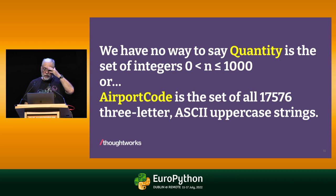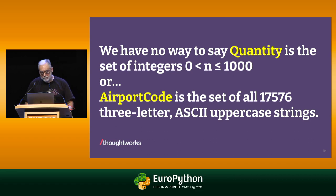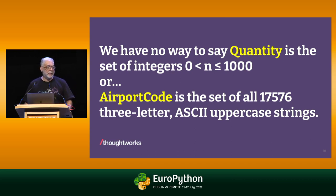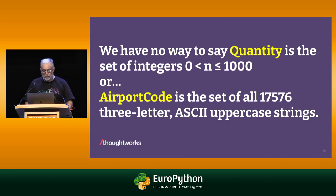We have no way to say that a quantity type in an e-commerce application should validate that orders are not placed with zero of an item or more than a thousand — that could be an interesting safety measure. There's no way in Python to say that in the type system. Similarly, there's no way to express that an airport code is the set of all 17,576 three-letter combinations of uppercase ASCII letters. Neither of those sets can be expressed in the type systems of mainstream languages, and certainly not in the type system of Python.